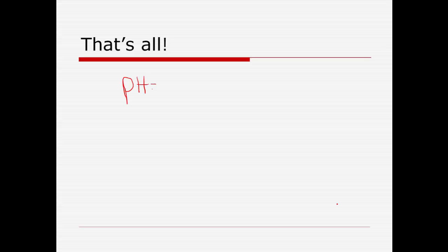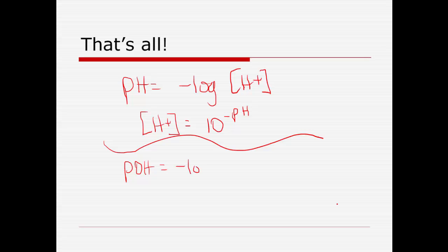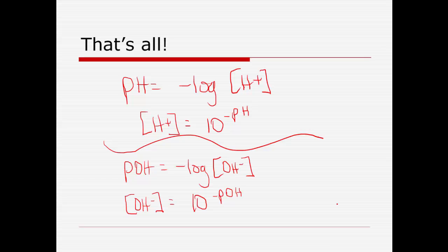To summarize the formulas: pH equals negative log of hydrogen ion concentration; hydrogen ion concentration equals 10 to the negative pH. Replace hydrogen with hydroxide and you get the other set: pOH equals negative log of hydroxide ion concentration; hydroxide concentration equals 10 to the negative pOH. That's everything we've covered. I hope this was helpful — thanks for watching.